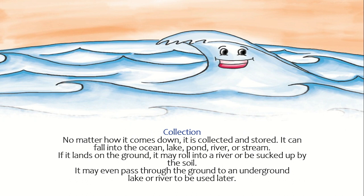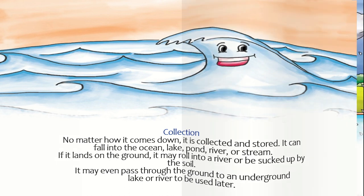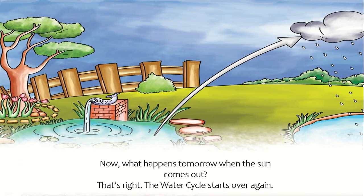Collection: No matter how it comes down, it is collected and stored. It can fall into the ocean, lake, pond, river, or stream. If it lands on the ground, it may roll into a river or be sucked up by the soil. It may even pass through the ground to an underground lake or river to be used later. Now, what happens tomorrow when the sun comes out? That's right — the water cycle starts over again.